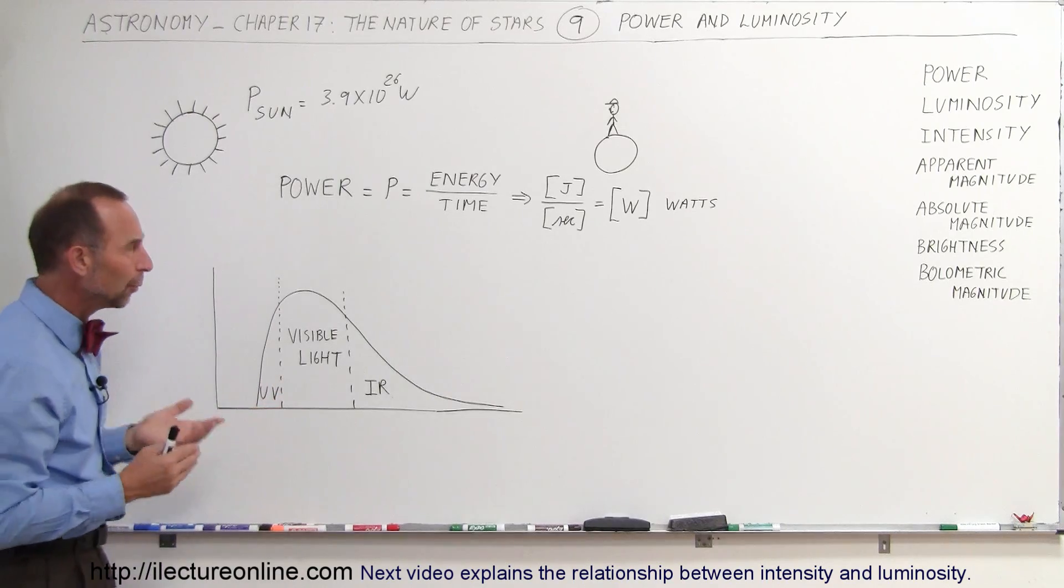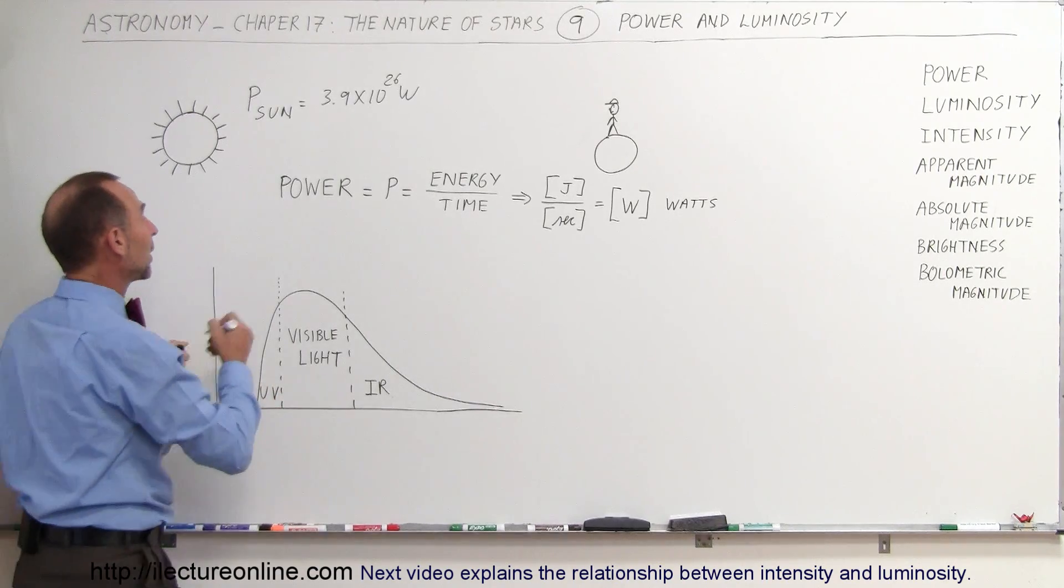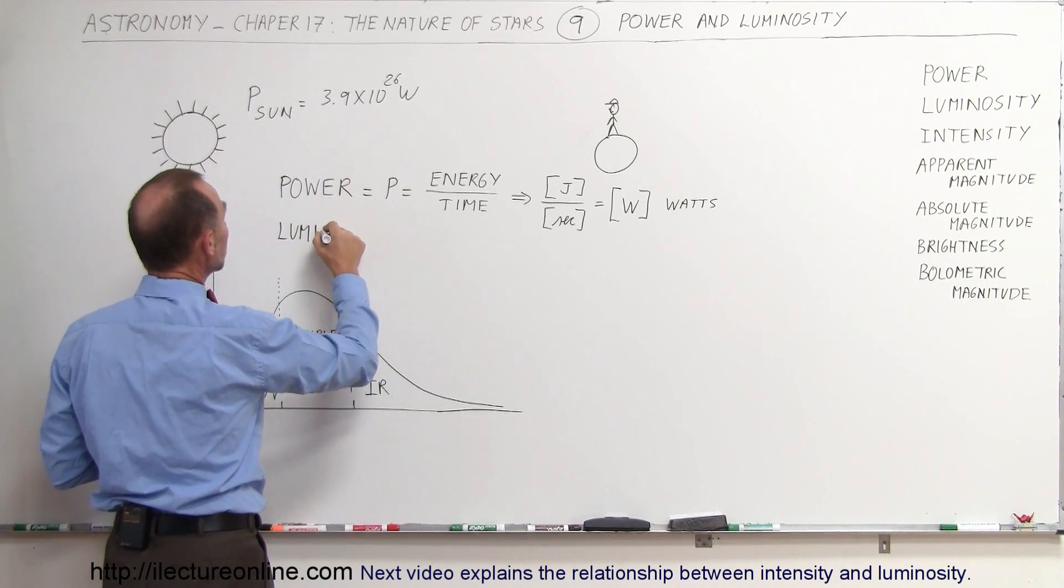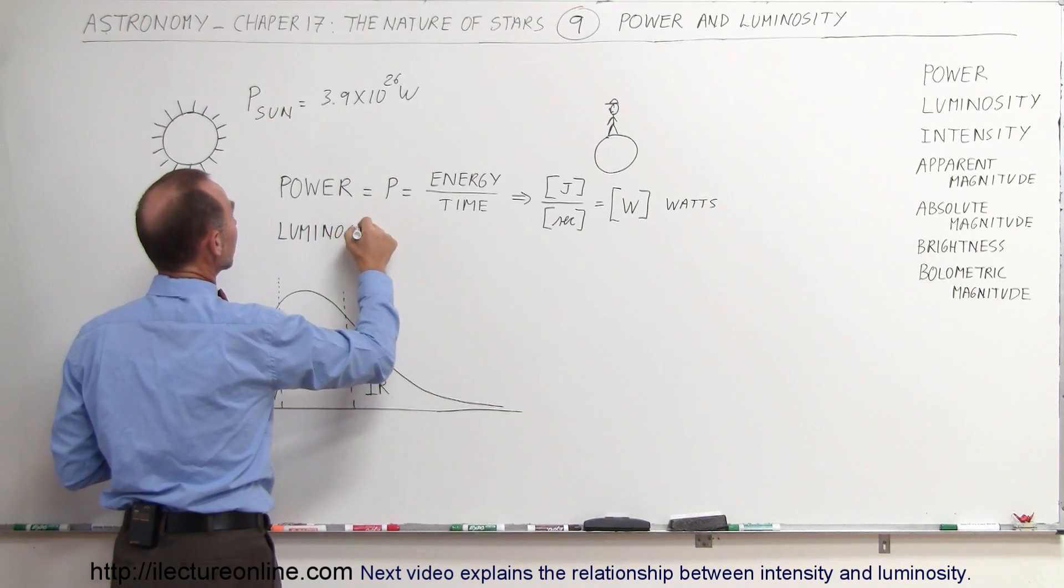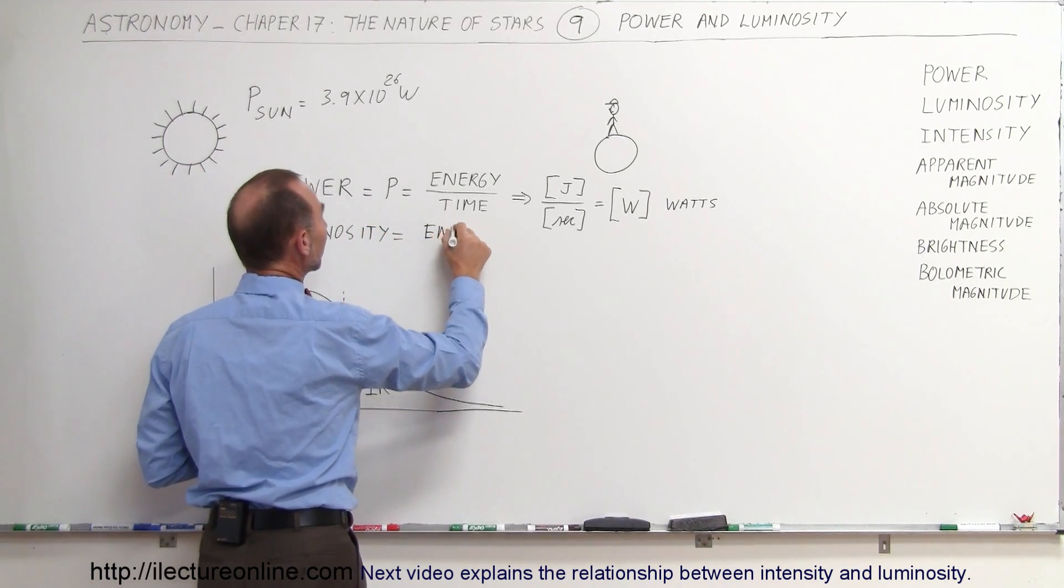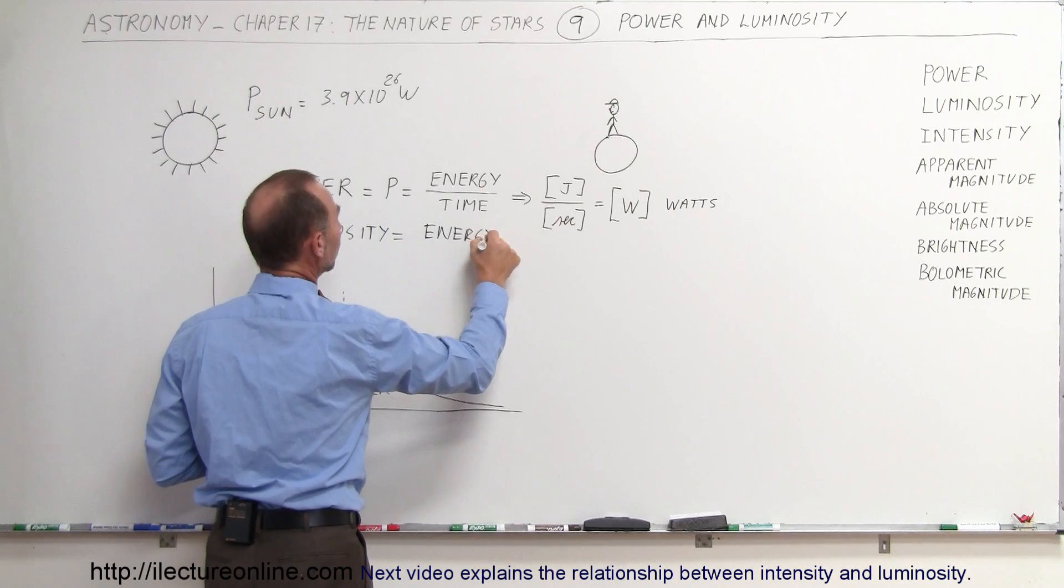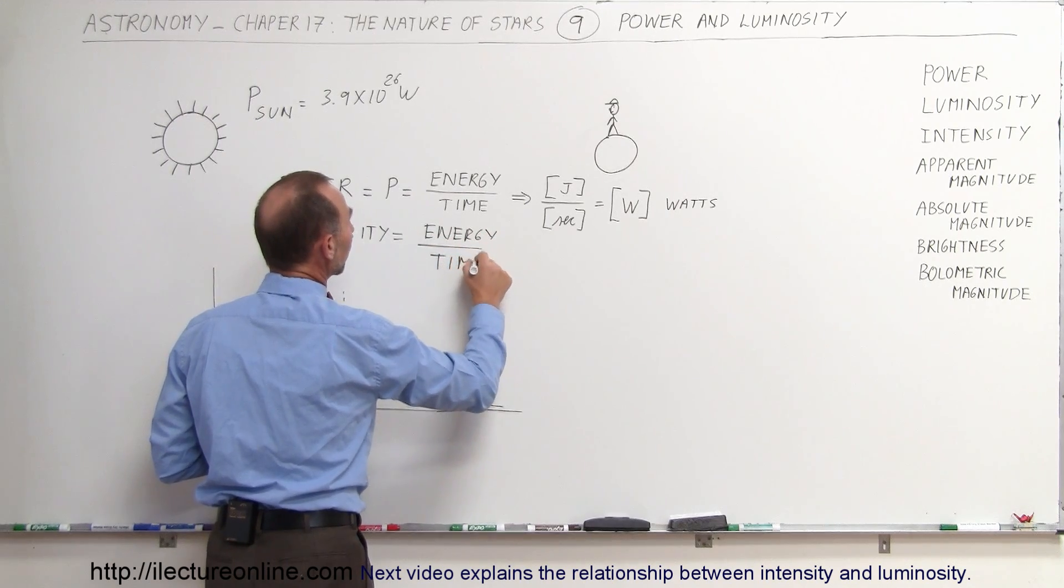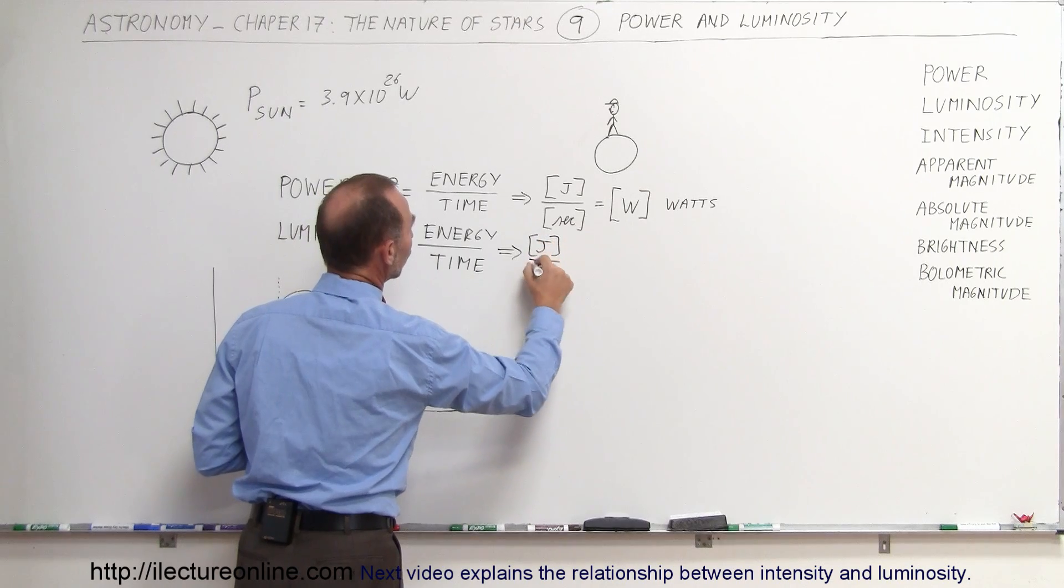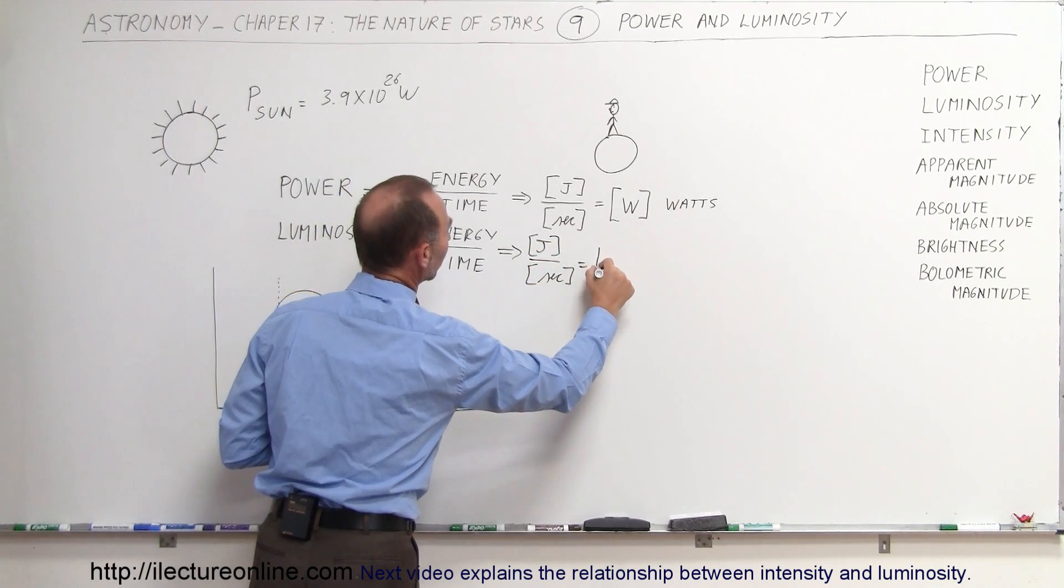Now in astronomy, rather than talk about the power of a star, we tend to talk about the luminosity of a star. And just because we use a different word, luminosity, it is also the energy per unit time, exactly like power, energy per time, and it's also expressed in terms of joules per second, and of course joules per second is, of course, watts.